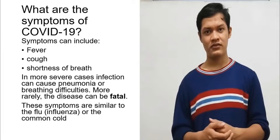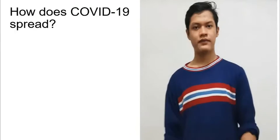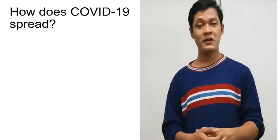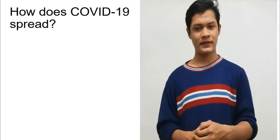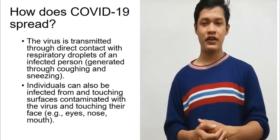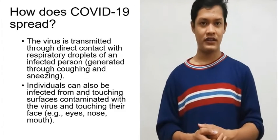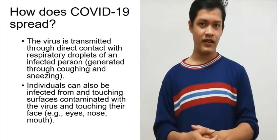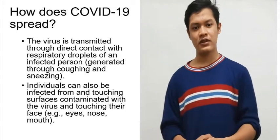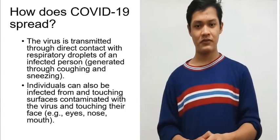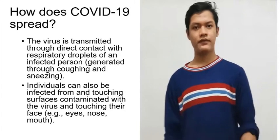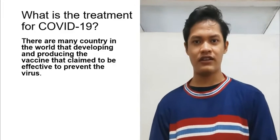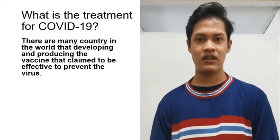It's similar to flu or a common cold, but it isn't. So how does COVID-19 spread? There are many ways it spreads, but we'll take two examples. First, the virus is transmitted through direct contact with respiratory droplets of an infected person, usually generated through coughing and sneezing. Individuals can also be infected from touching surfaces contaminated with the virus and then touching their face. Fortunately, there are many countries already making and producing vaccines that are claimed to work against this virus.